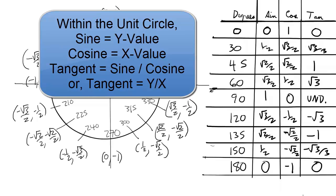A few things to know about the unit circle. Sine will be the y value of the coordinates. Cosine will be the x value of the coordinates. And tangent will be sine divided by cosine, or the y value of the coordinates divided by the x value of the coordinates.